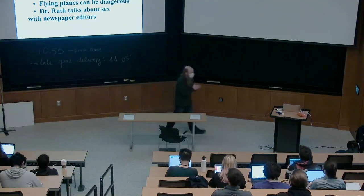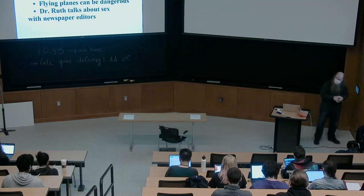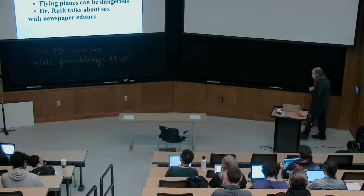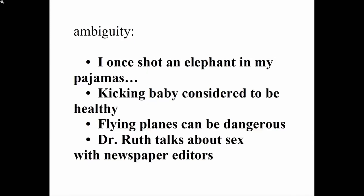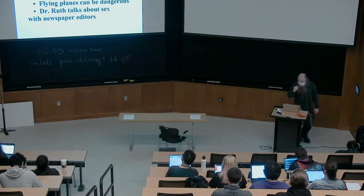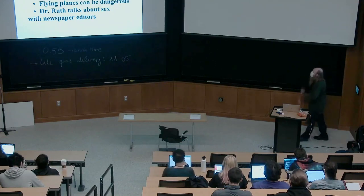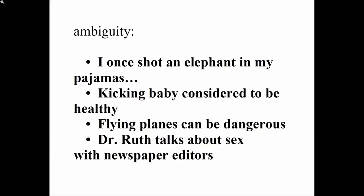The kinds of ambiguity we were talking about before were kinds of what's called structural ambiguity — sentences that had more than one meaning because it was possible to draw more than one tree for them. The sentence we spent a lot of time talking about was 'I once shot an elephant in my pajamas,' where 'in my pajamas' could be attached in a couple different places — it could modify the elephant or the verb phrase 'shot an elephant.'